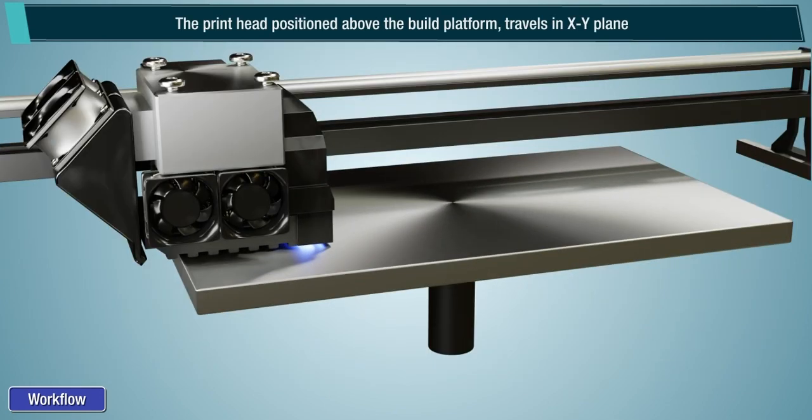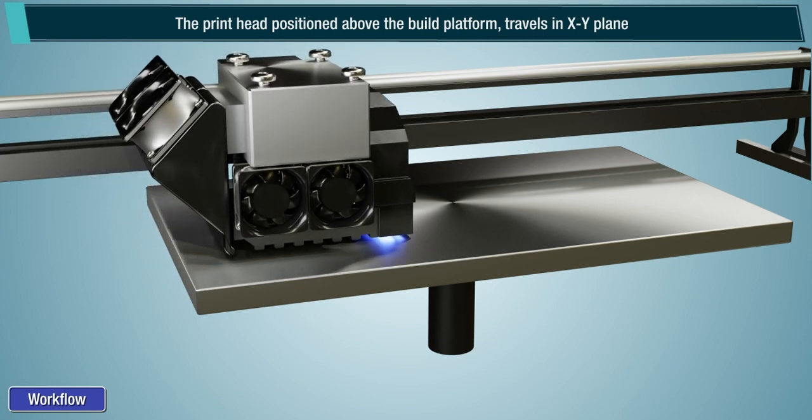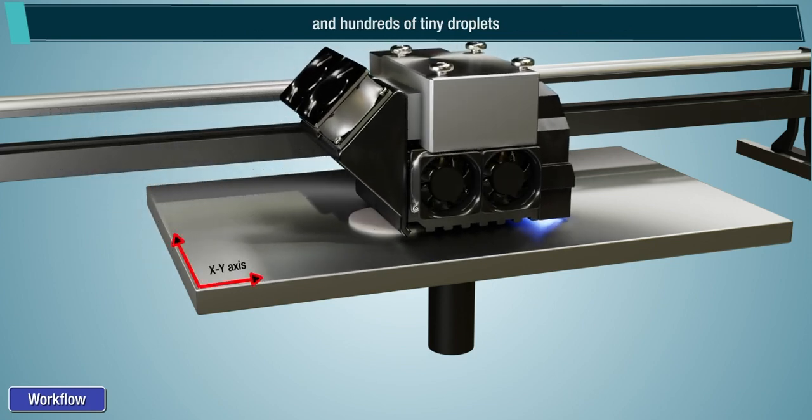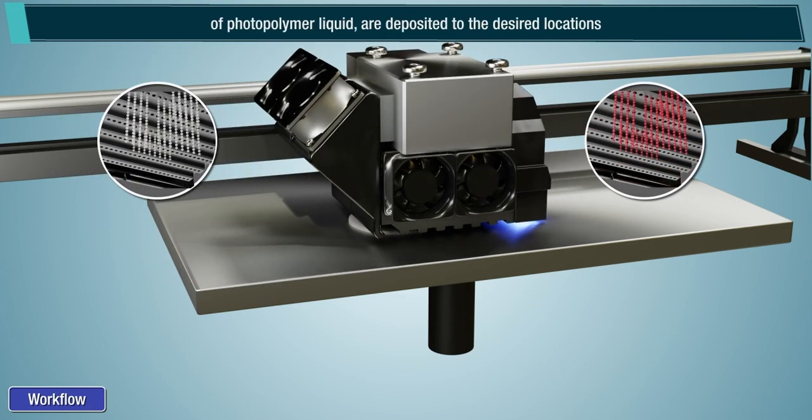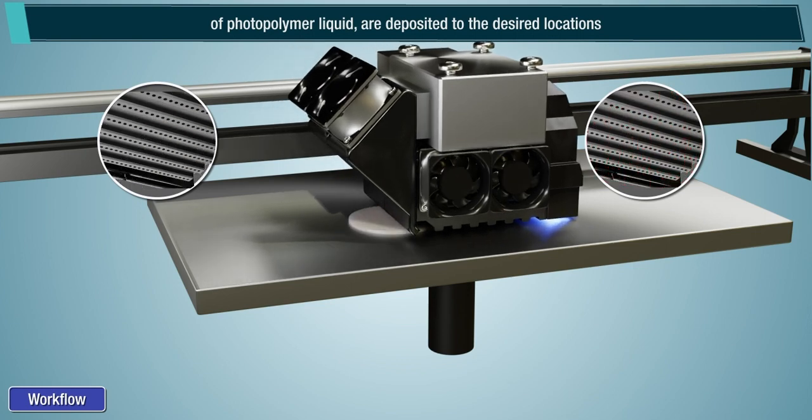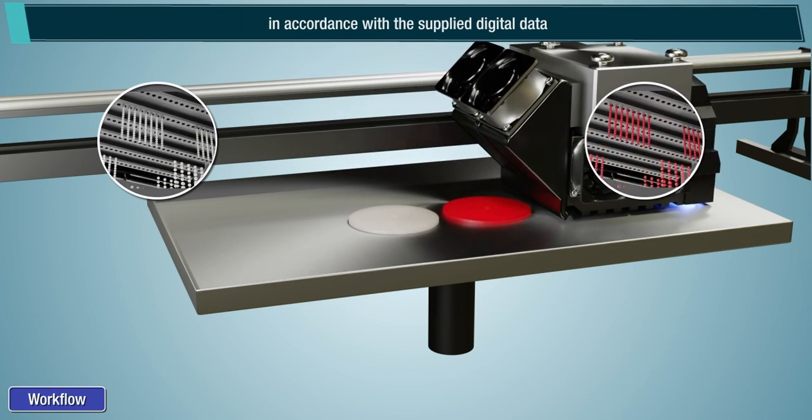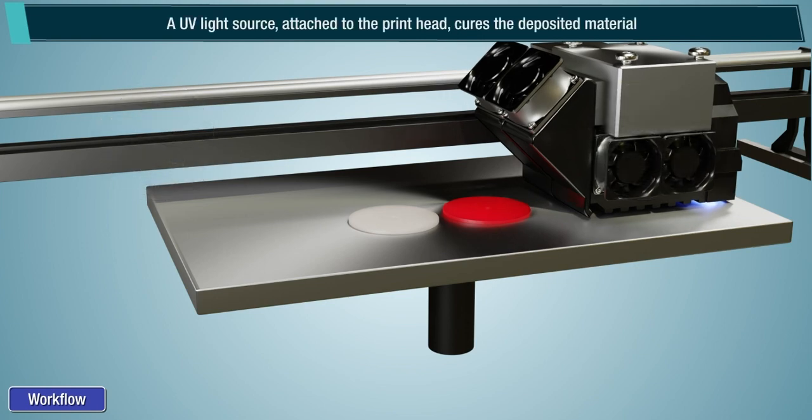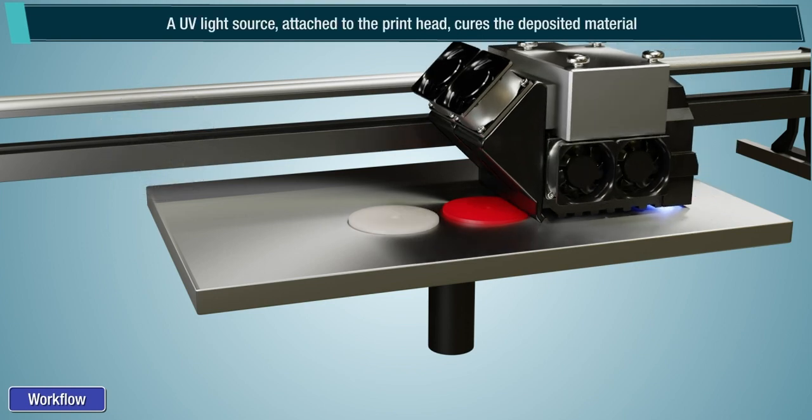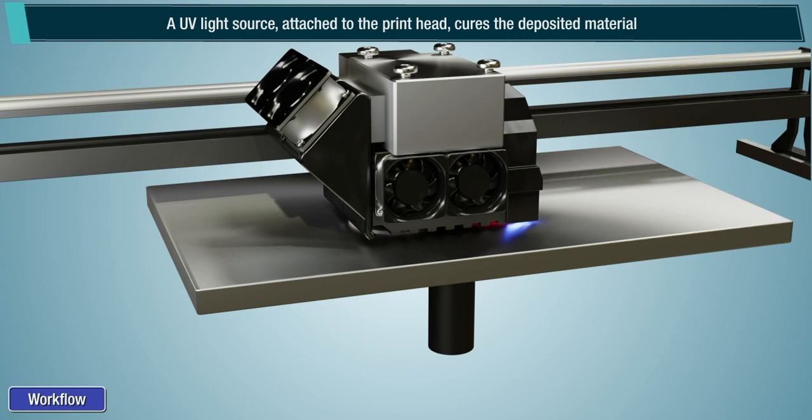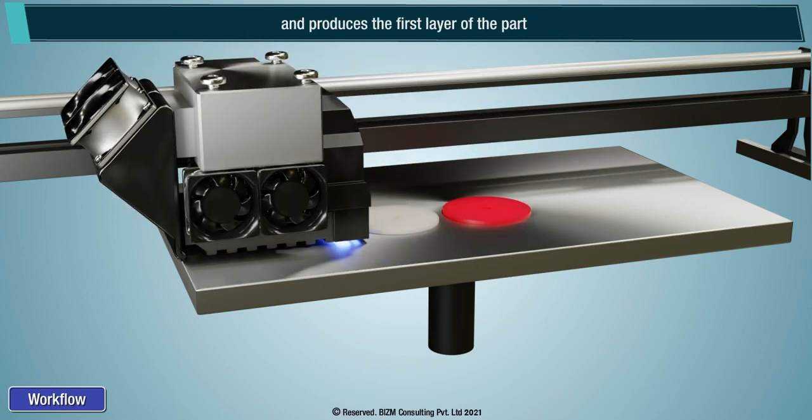The printhead positioned above the build platform travels in X-Y plane and hundreds of tiny droplets of photopolymer liquid are deposited to the desired locations in accordance with the supplied digital data. A UV light source attached to the printhead cures the deposited material and produces the first layer of the part.